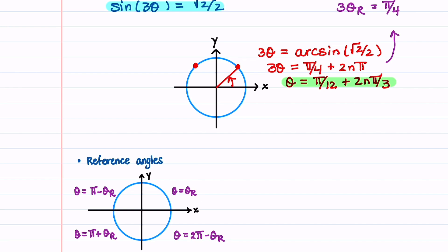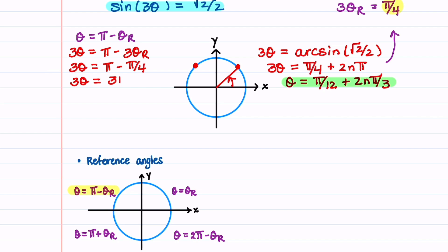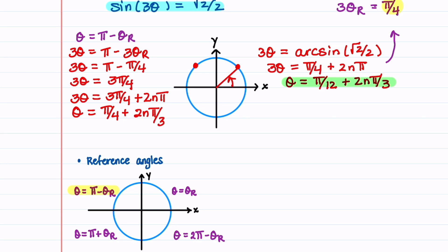In the second quadrant our angle is equal to π minus θ_r, so in a similar way 3θ = π − 3θ_r. We found that 3θ_r = π/4, so we have 3θ = π − π/4 = 3π/4. Accounting for all the angles, 3θ = 3π/4 + 2nπ. Dividing by 3 gives θ = π/4 + 2nπ/3. We'll now highlight the second solution.